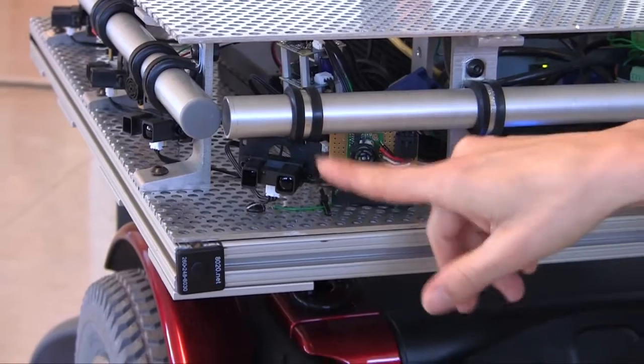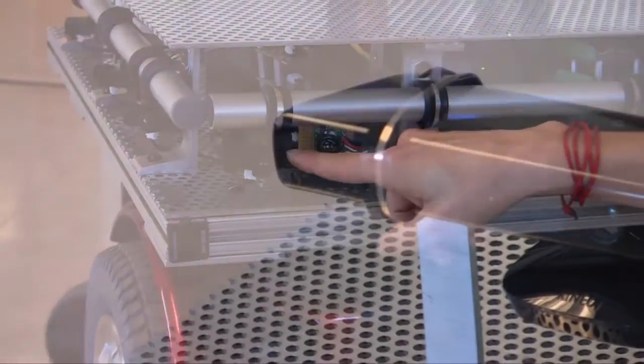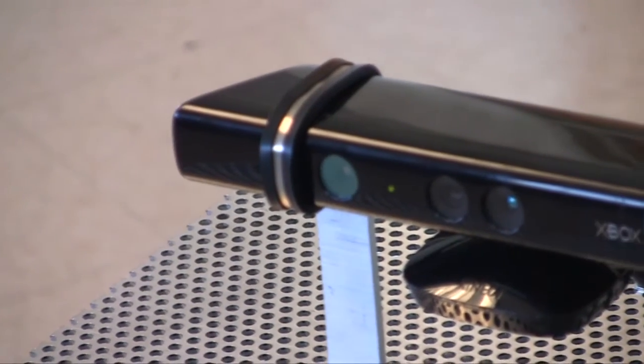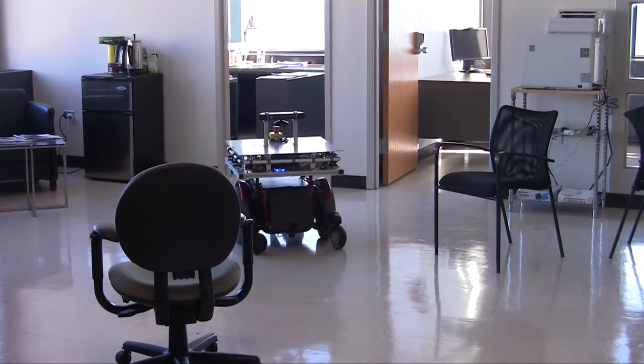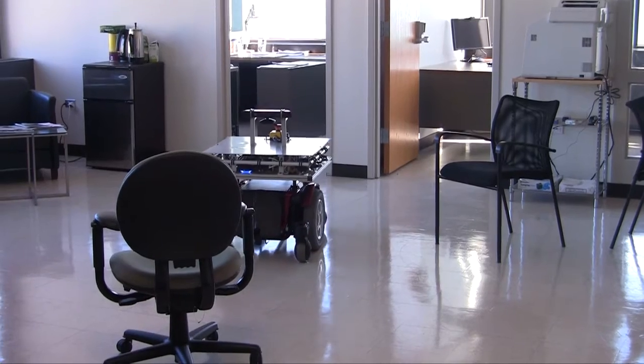Now, what we're doing with this wheelchair, and what some other people have done as well, is to add sensors to it so that the wheelchair is now able to detect other aspects of its external environment. So you saw that we had ultrasonic sensors, we have the Microsoft Kinect, we have IR sensors, so we're able to detect obstacles and things like that.